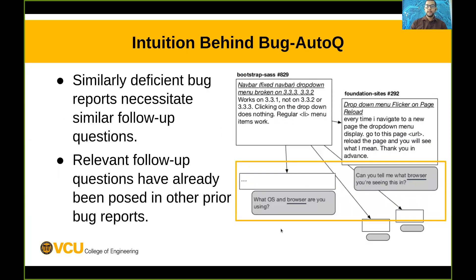The intuition behind our idea can be explained with these two deficient bug reports. These two deficient bug reports are from two different repositories, but they are missing similar kinds of information, and the follow-up questions asked are also about similar topics. We can use this information: when a new bug report comes in, if it is missing similar information to a prior deficient bug report, we can use relevant follow-up questions from those prior bug reports.